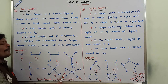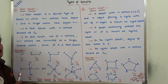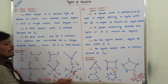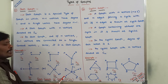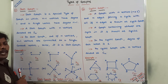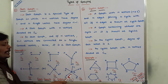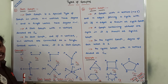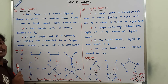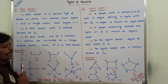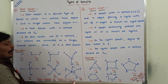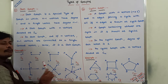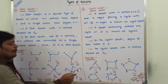The star graph S6 consists of 6 vertices: A, B, C, D, E, F. According to the definition, a star graph is a special type of graph in which n minus 1 vertices have degree 1. Among the 6 vertices, without considering vertex A, the remaining vertices are B, C, D, E, F.